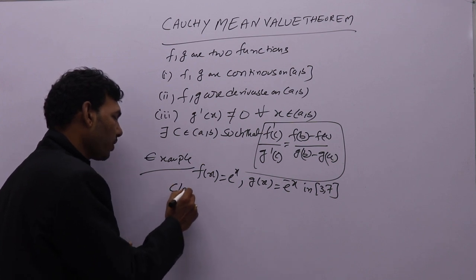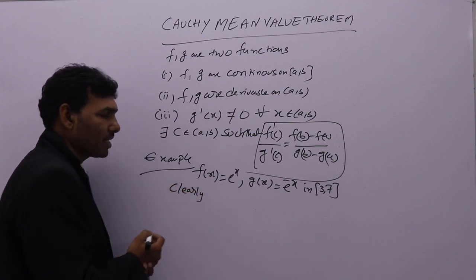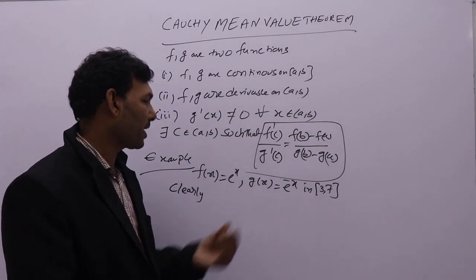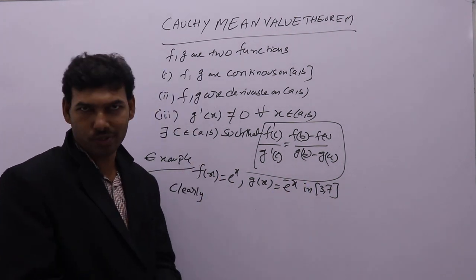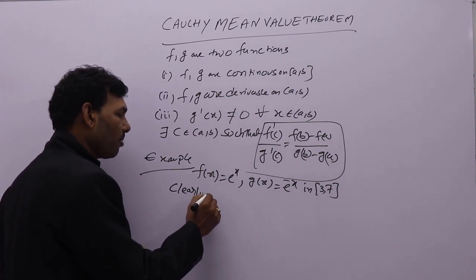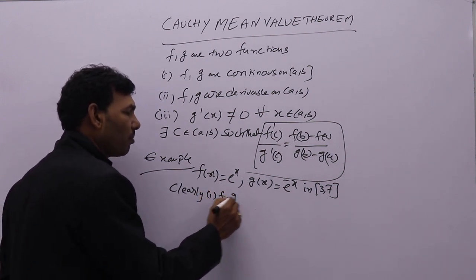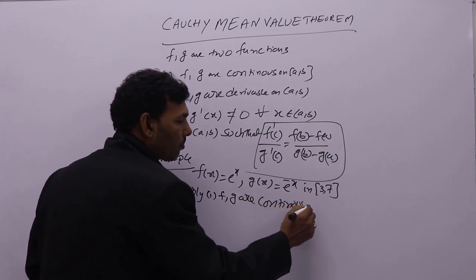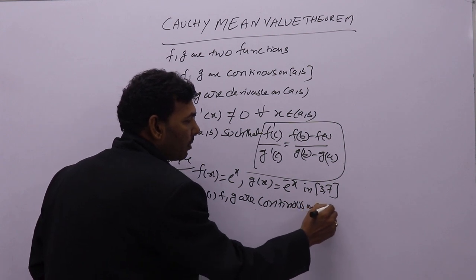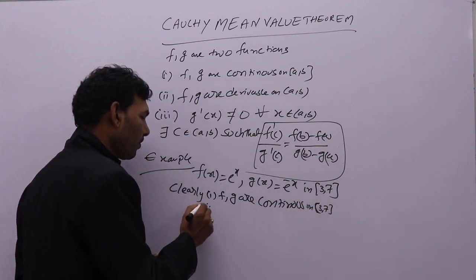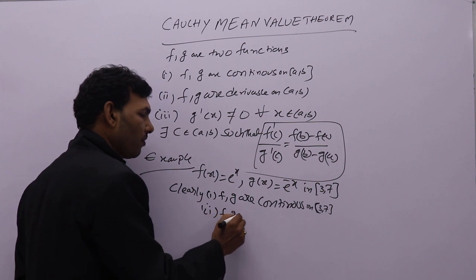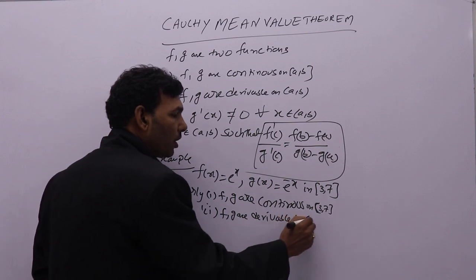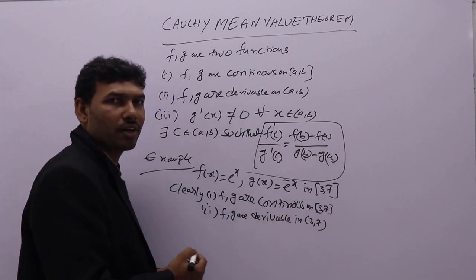Clearly, the exponential function e power x is always continuous and derivable because e power x in this interval has finite values. Therefore, f and g are continuous in the given closed interval, and f and g are derivable in open interval (3, 7).